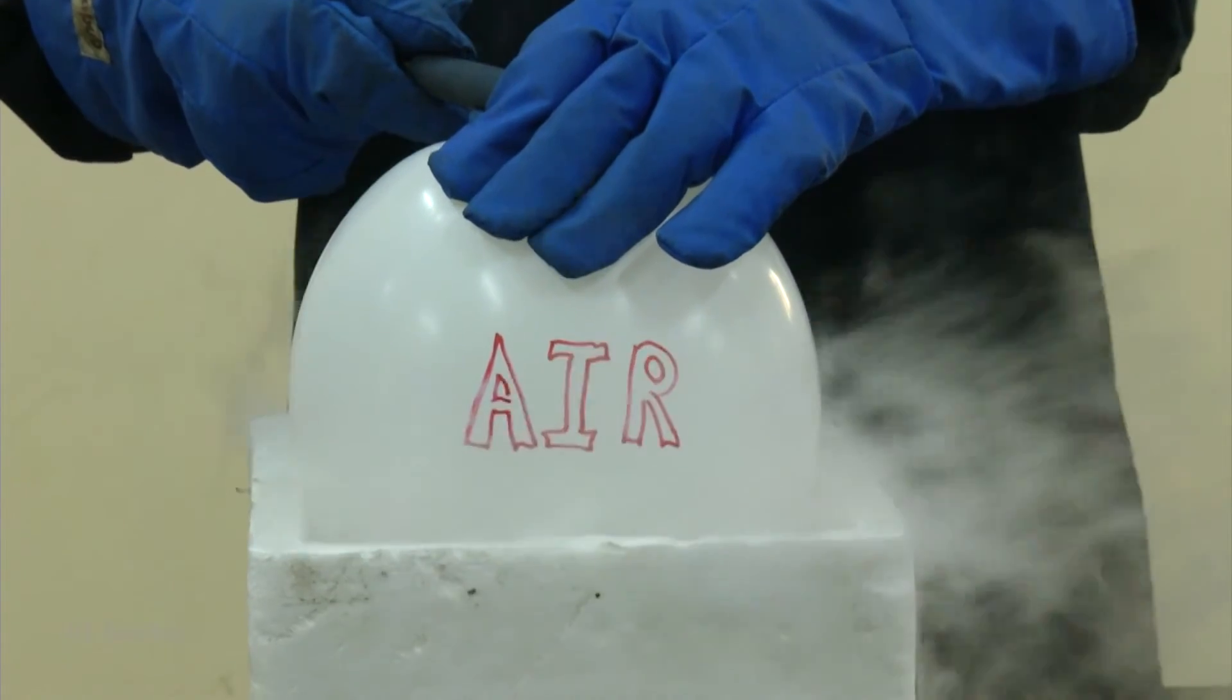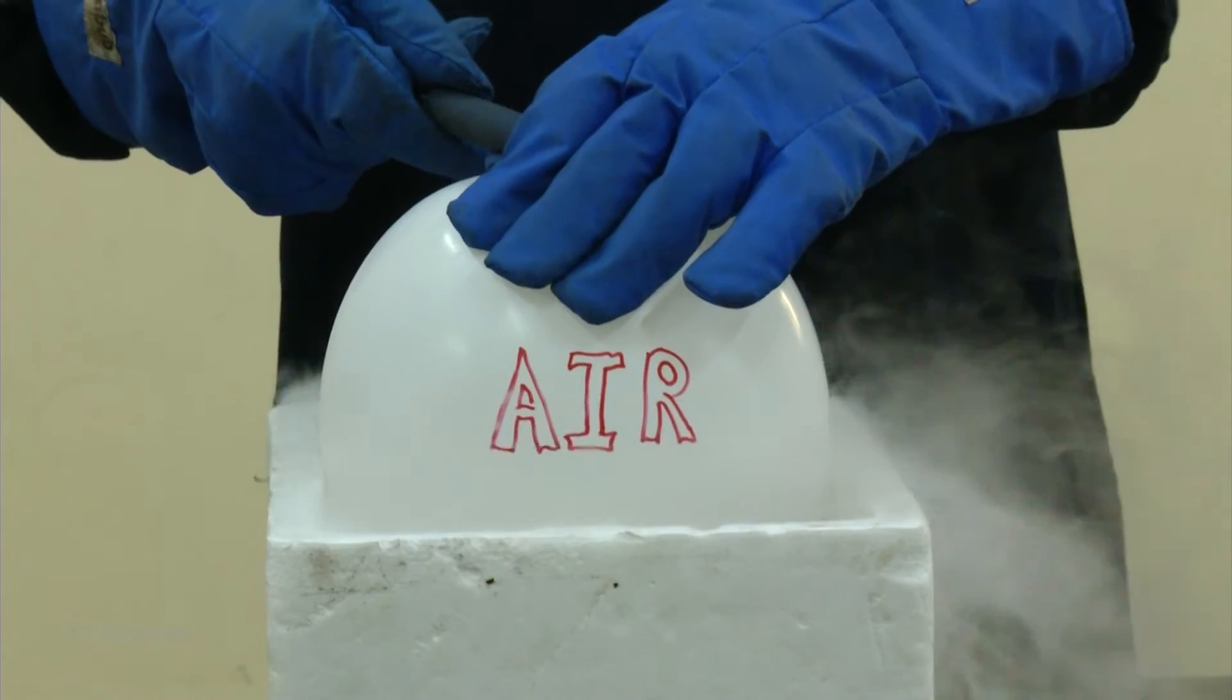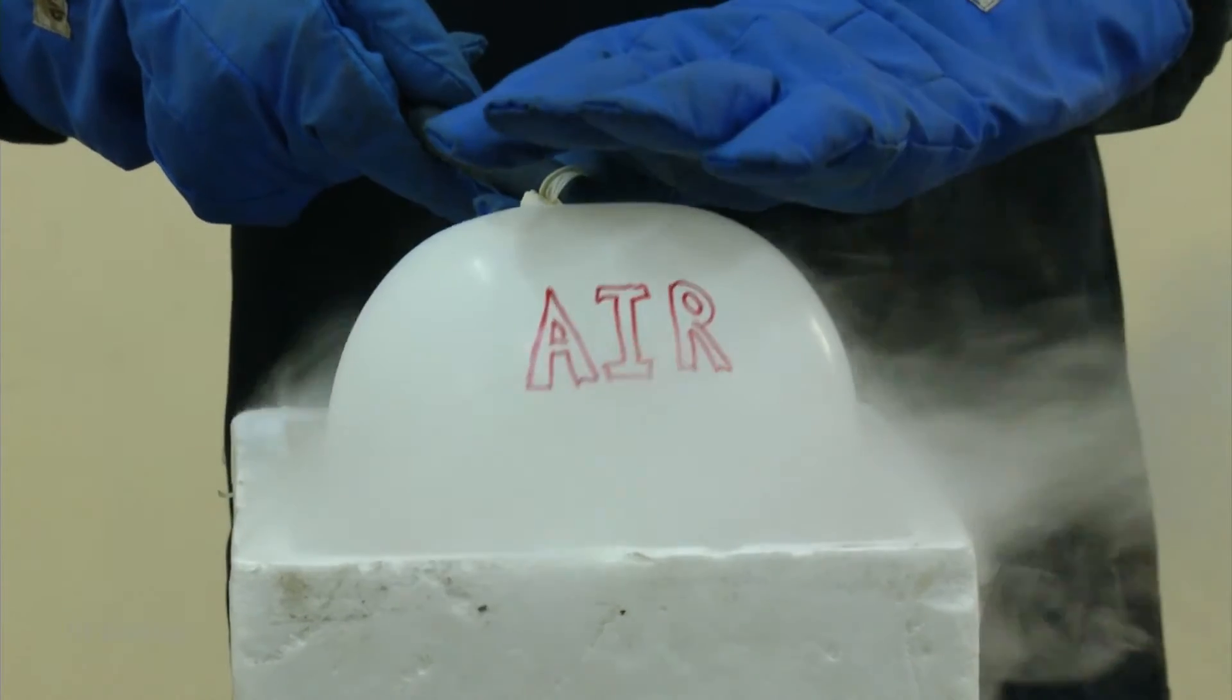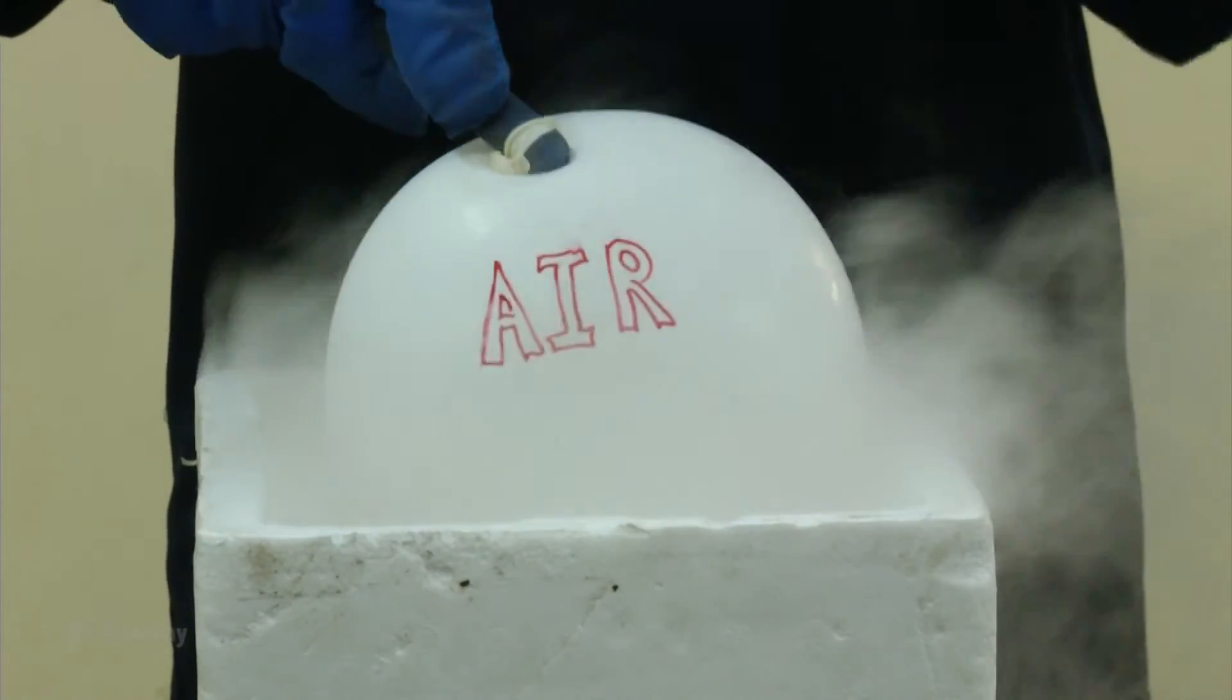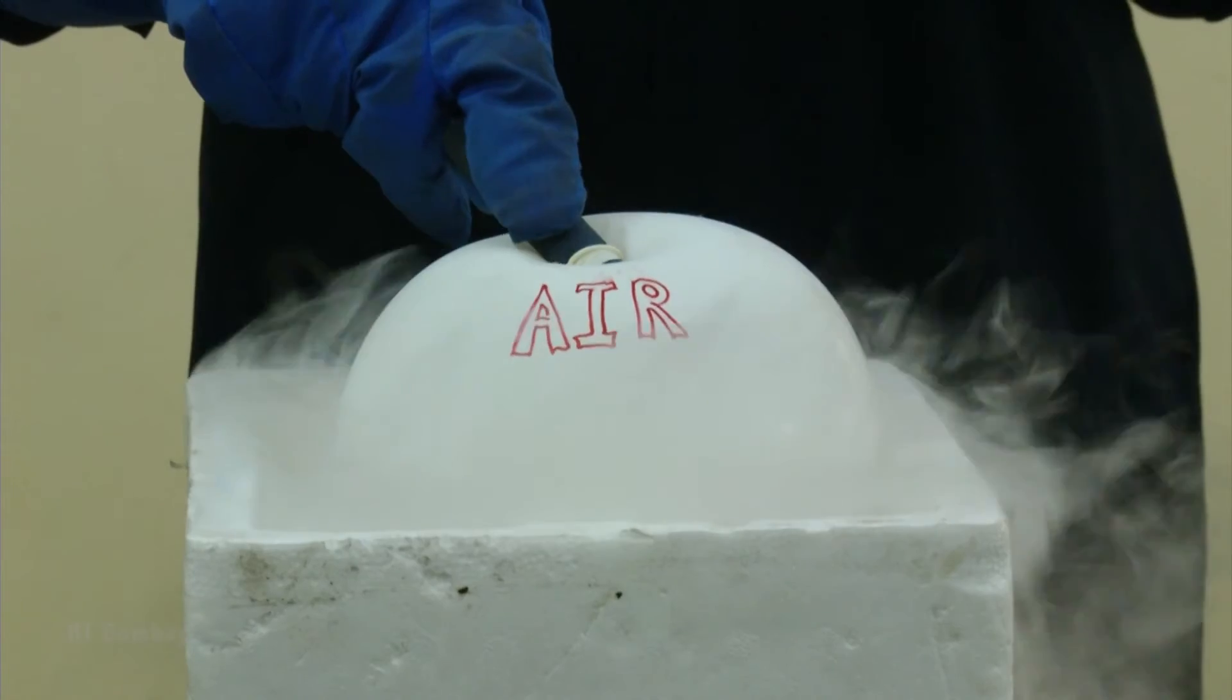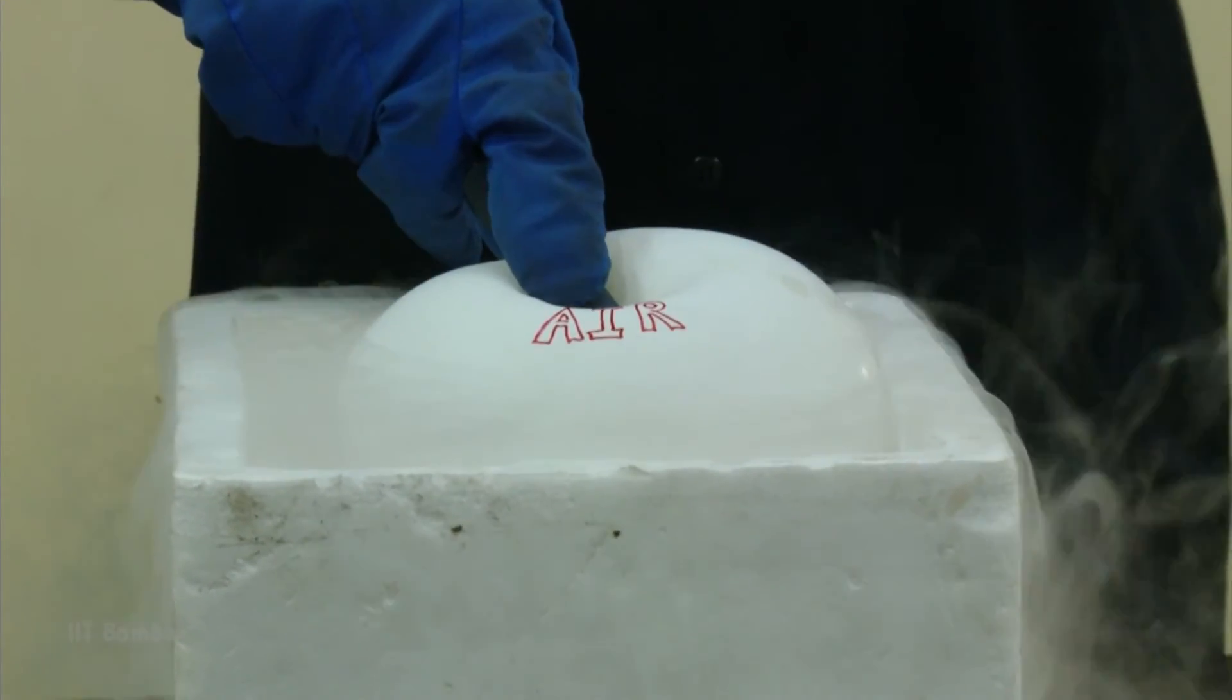Air has a boiling point of 78 Kelvin, and you can see that this air in gaseous form will get liquefied when it is put in liquid nitrogen. Also, you can observe the shrinking of this balloon as the temperature of the air decreases. The volume will decrease.